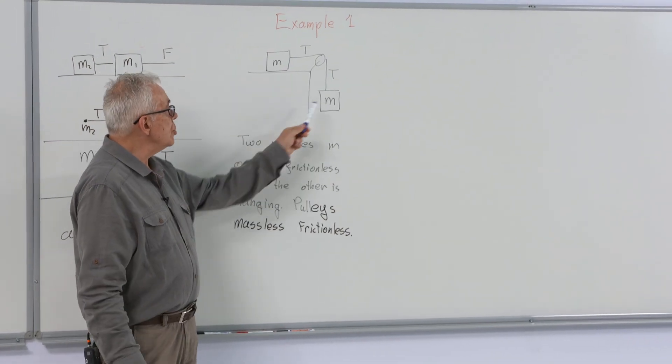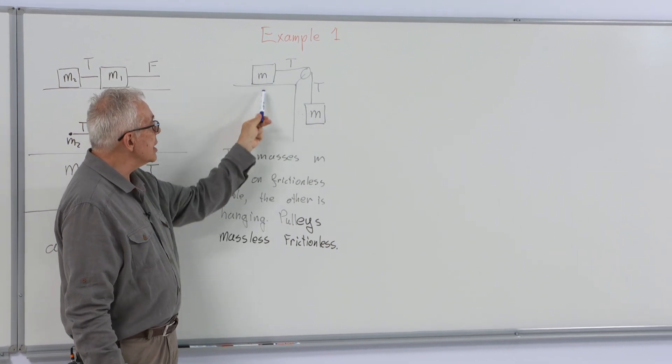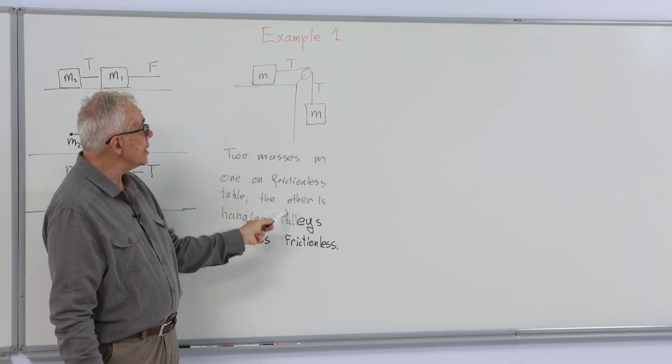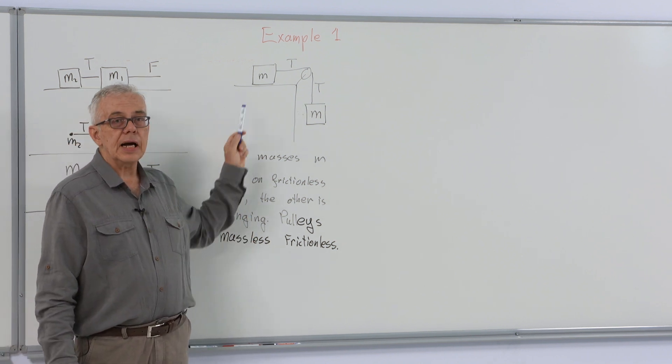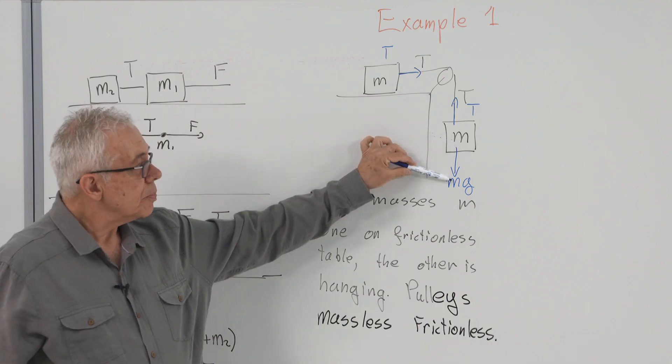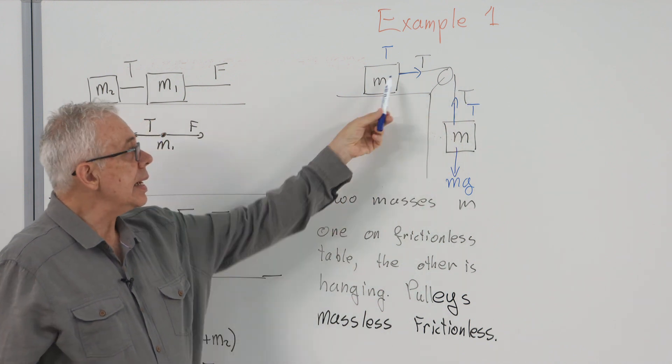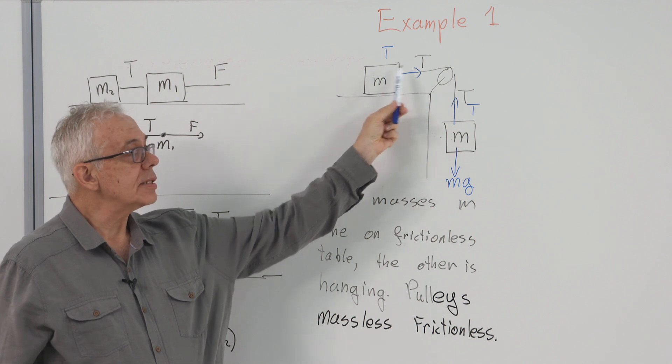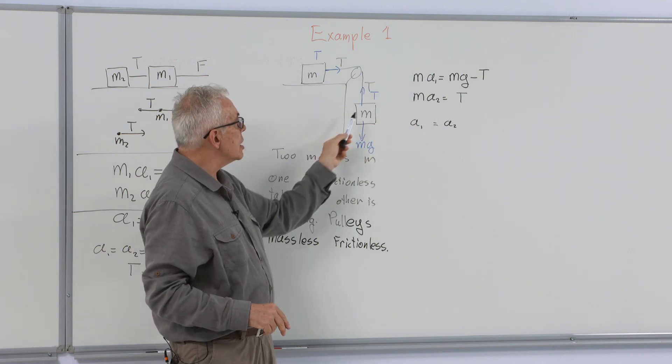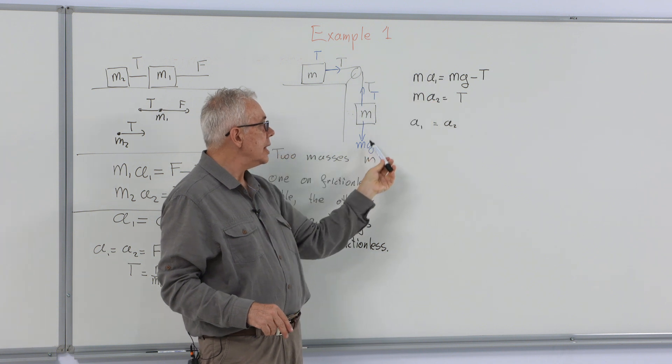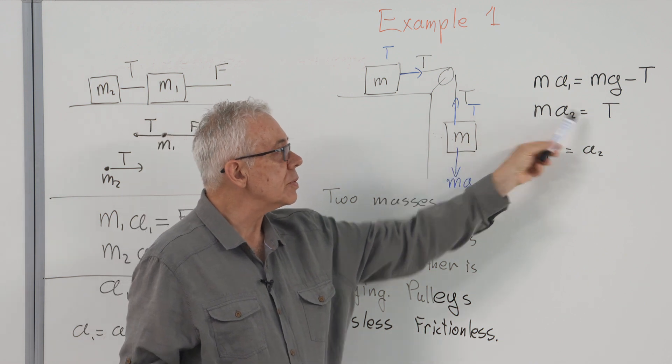Our first example concerns two masses, equal masses M. One of them is hung from a string and the other is resting on a frictionless flat table. The pulley is massless and frictionless. The forces acting on these are Mg pulling the mass downward and tension T pulling it up, and tension T pulling this mass towards right. Here, our equations of motion are, for this body, M A1 equals Mg minus T. For this, M A2 equals T.